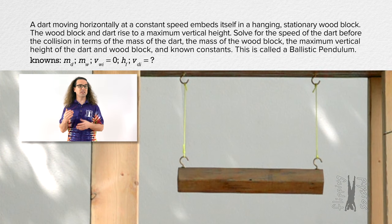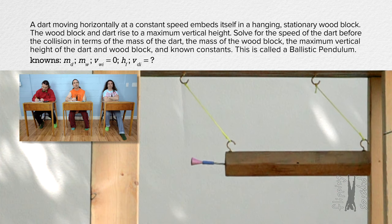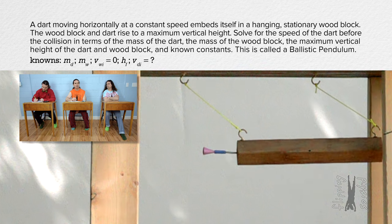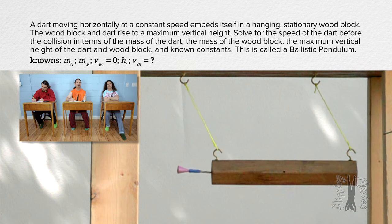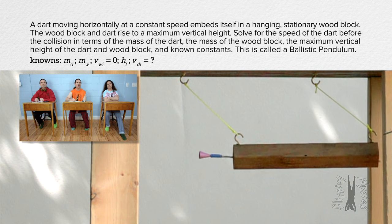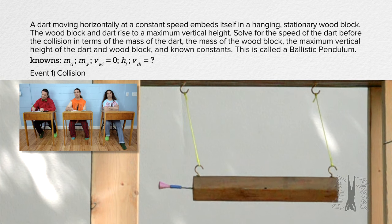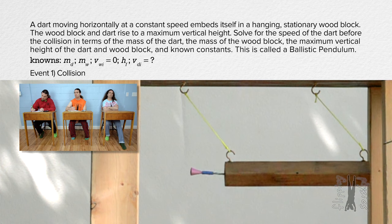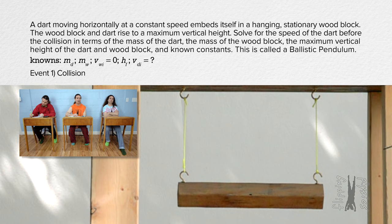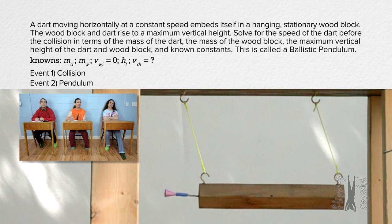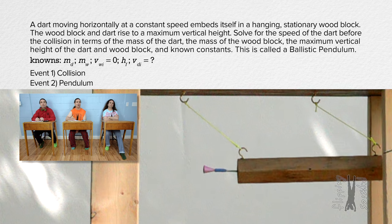Bobby, please identify the different events in this problem and the general physics principles during those events. What things happen in this problem and what physics will we use to solve it? There is a collision, and then it swings on the strings. And what is that called? A pendulum. So there are two events: a collision and a pendulum.